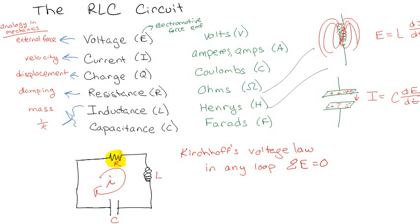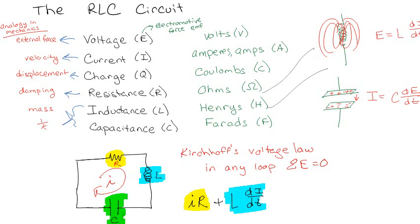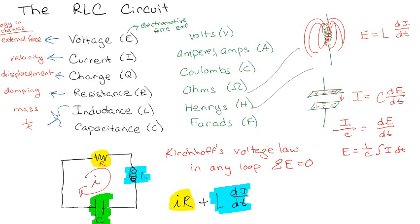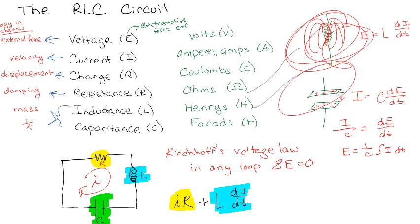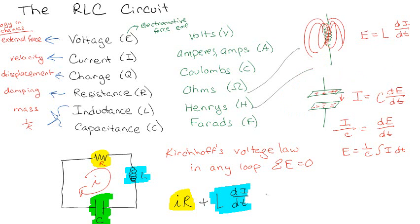The voltage drop across the resistor is I·R. The voltage drop across the inductor is L·di/dt. The voltage drop across the capacitor is (1/C)·∫I dt. The current is not constant, so I can't pull it out of the integral. Setting the sum equal to zero gives us the governing equation.